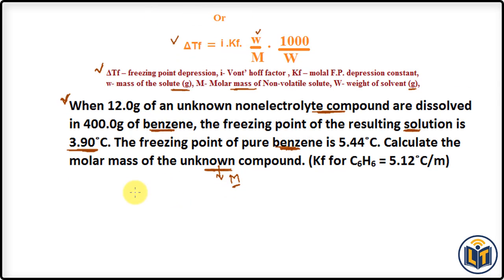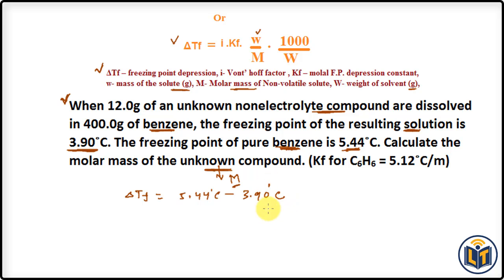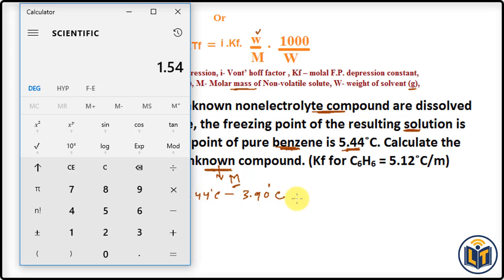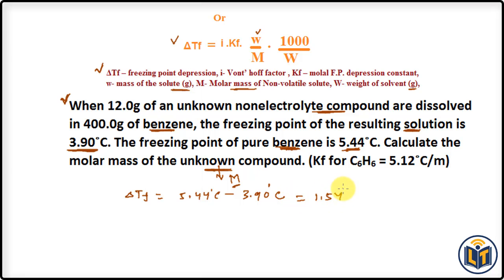The formula is: Delta TF equals freezing point of solvent minus freezing point of solution. That is 5.44°C minus 3.90°C. Doing the subtraction: 5.44 minus 3.90 gives us 1.54°C.